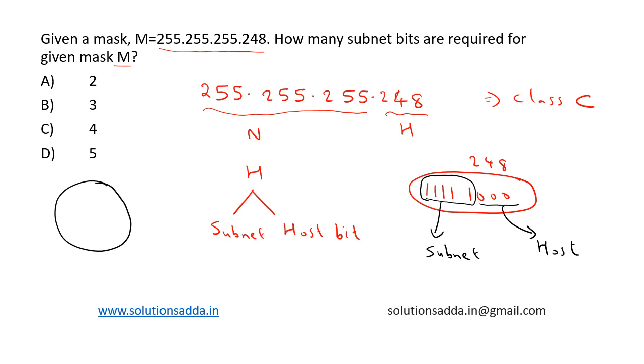Then it can be subdivided into, say, 4 subnets like this. Using 2 bits we can divide the whole network into 4 subnets. This is 00, this is 01, this is 10, and this is 11.